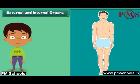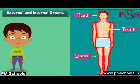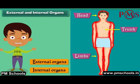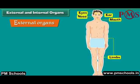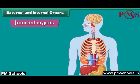Each of the three main parts of the human body bears many organs. These organs may be classified as external organs and internal organs. The organs that can be seen from outside are called external organs — for example, eyes, ears, nose, mouth and limbs.